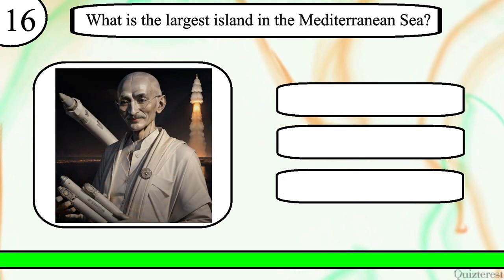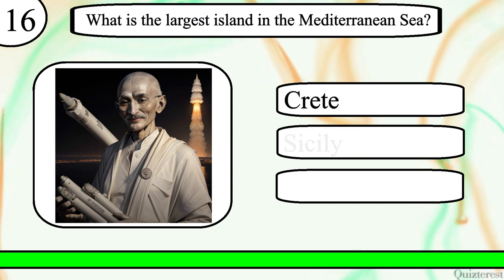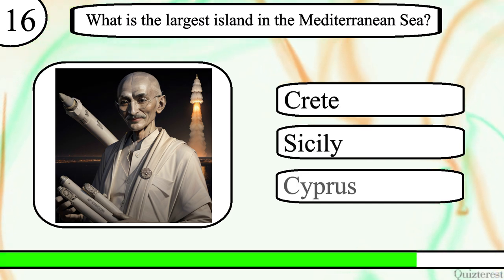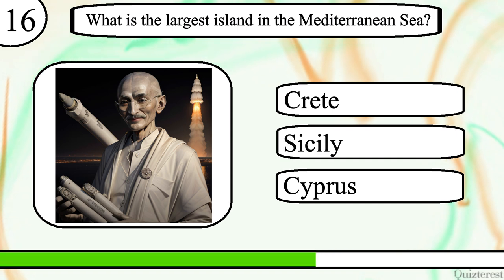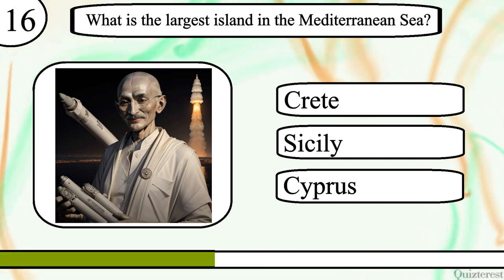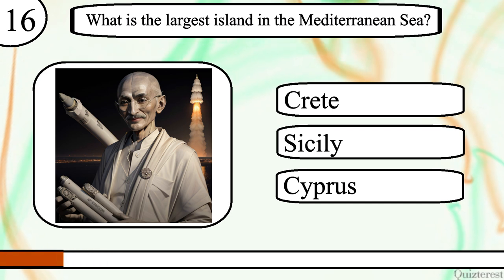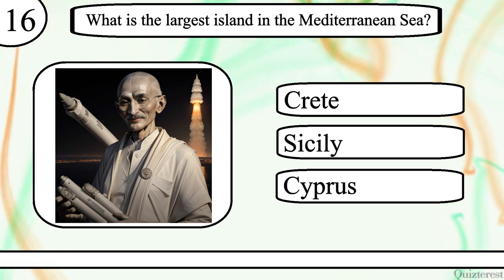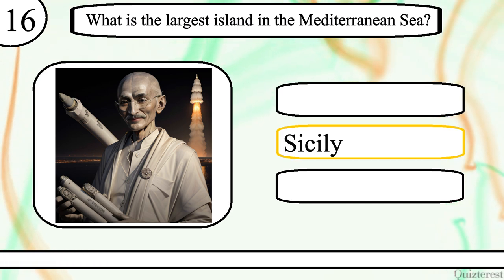Question 16. What is the largest island in the Mediterranean Sea? Crete, Sicily or Cyprus? The correct answer is Sicily.